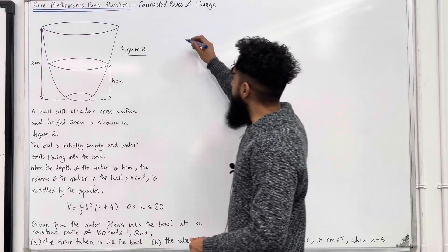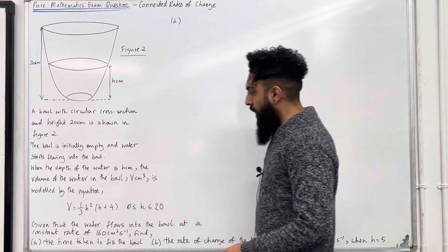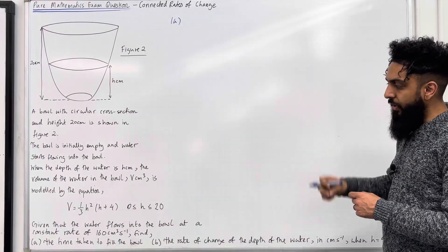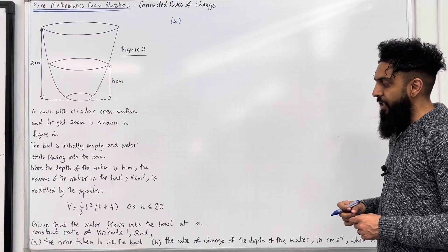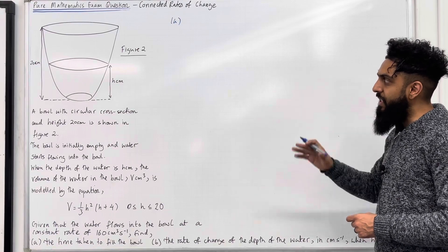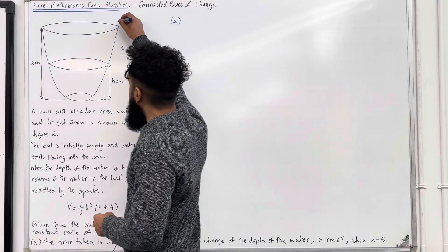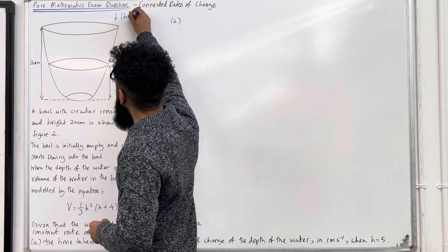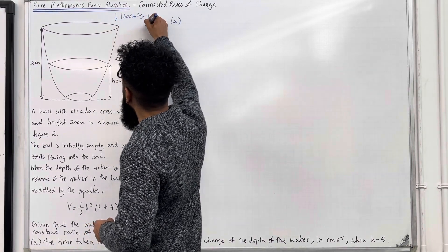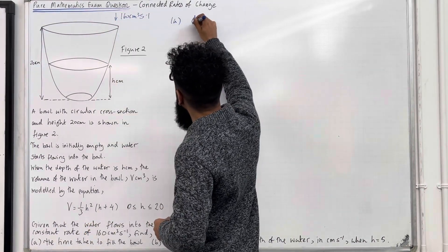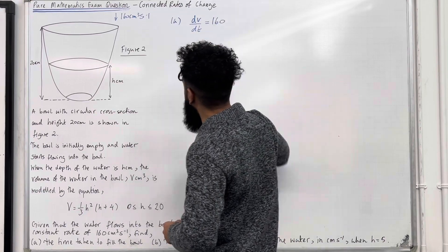Let's have a look at the solution to part A. The water flows into the bowl at a constant rate of 160 cm³ per second. We can indicate this in the diagram. We've got water flowing in at 160 cm³ per second. This implies that dv over dt is equal to 160.